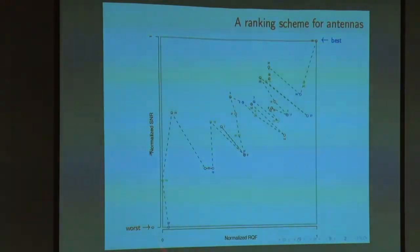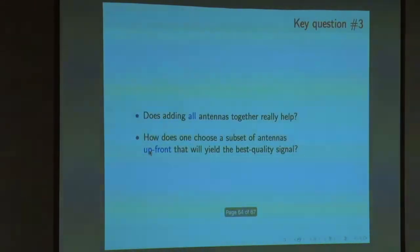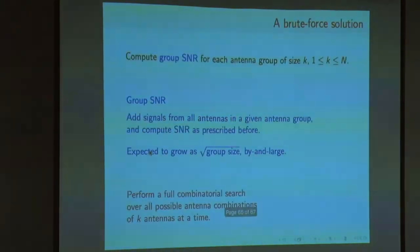If you plot the antennas on this signal to noise ratio versus response quality factor plane, then you can clearly rank them. The best ones show up at the top right end and the bad ones show up at the bottom right end. Does adding all antennas together really help? What we did was to take groups of - fix the size of a group, antenna group. Take all possible combinations of that group size. If you choose a size of 5 antennas, size of the group as 5, then you have 30C5 possible ways of choosing 5 antennas out of 30.